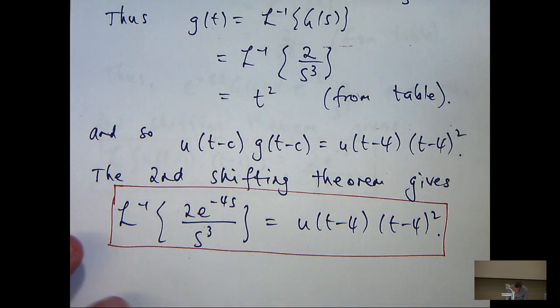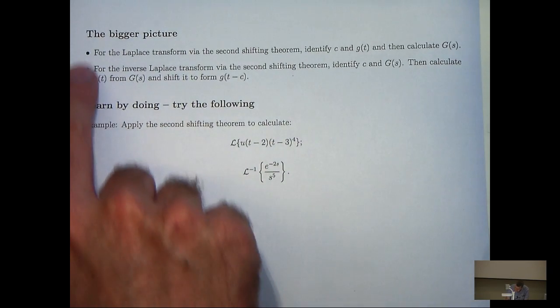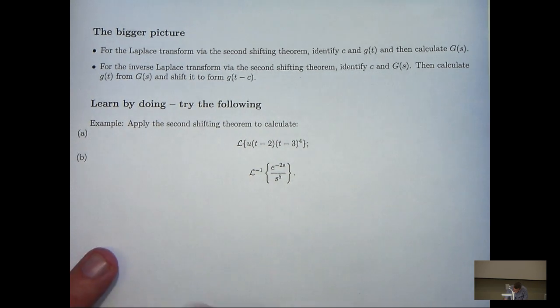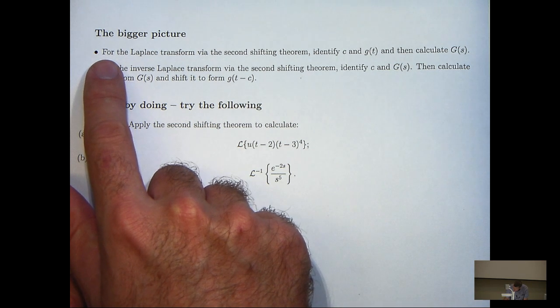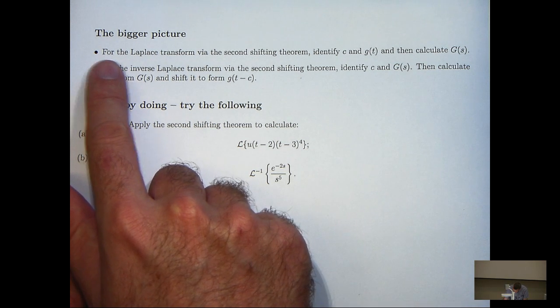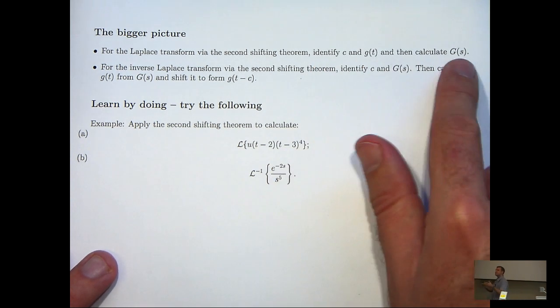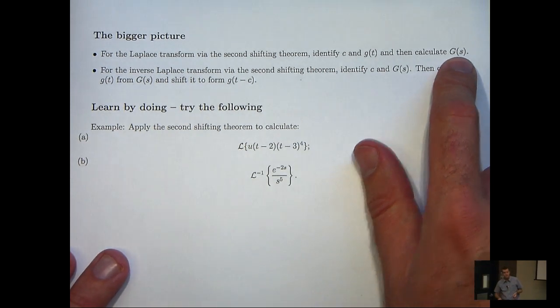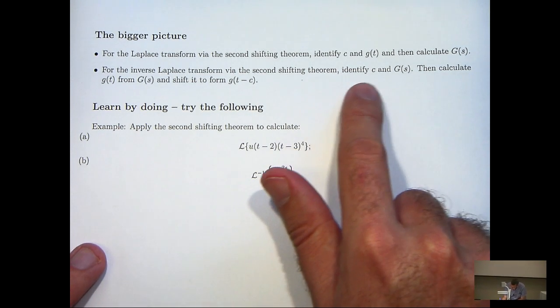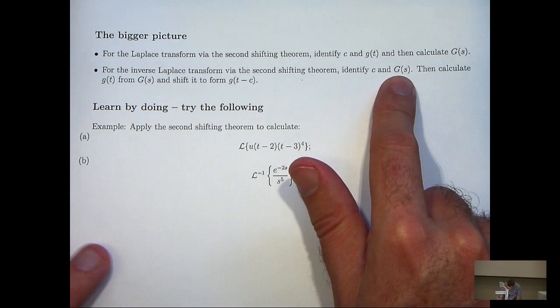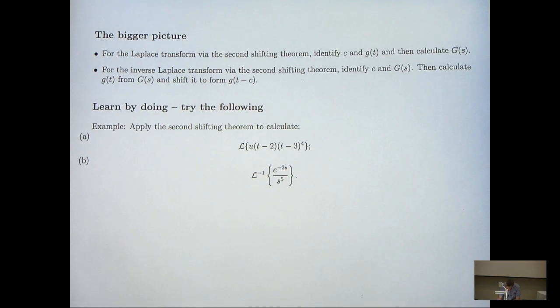Okay so we've solved our two problems, let's look at the bigger picture. And these two points just have to do with the method really, so some guidelines for applying the second shifting theorem. So to use the second shifting theorem to find the Laplace transform, identify c and little g of t and then calculate big G of s. When finding the inverse Laplace transform via the second shifting theorem, identify c and big G of s and then calculate little g of t from big G of s by taking the inverse transform and then shift it.